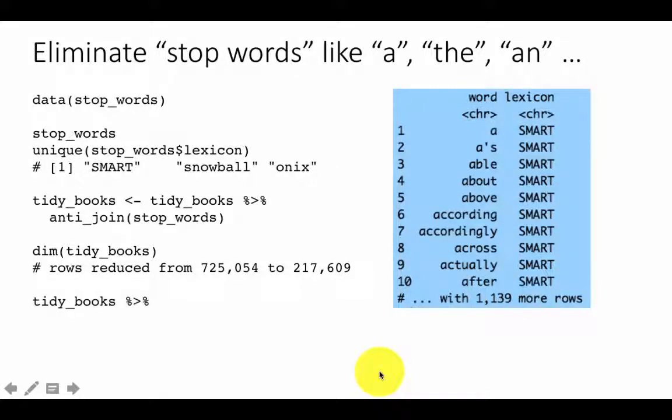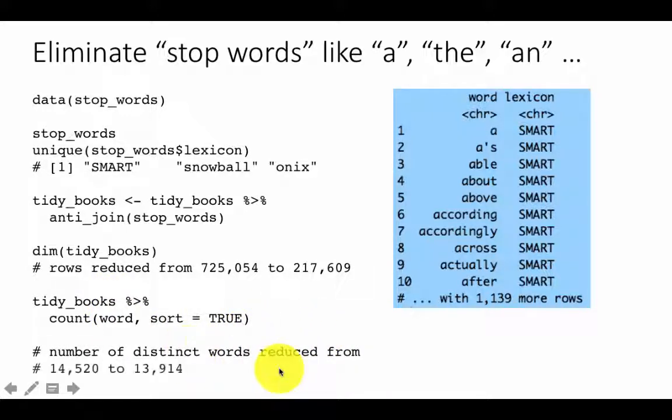Let's repeat the word count part and see what happens. We're saying tidy_books count words with sort equals TRUE. If you look at this, you'll find that the number of distinct words went down from 14,520 to 13,914.